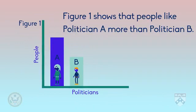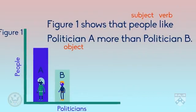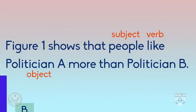Then we tell them what it means. Figure one shows that — our subject — 'people,' our verb — 'like,' our object — 'politician A' — more than politician B. Let's look at that again. We tell them where it is: 'Figure one shows.' Then we tell them what it means: that people like politician A more than politician B.